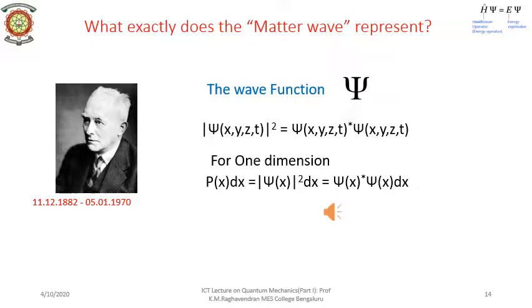We now come to the last question: what does the amplitude of the de Broglie wave represent? In general, in any wave the disturbance represents the change in the value of a physical quantity. So what is the physical quantity in the case of a matter wave? The interpretation was given by Max Born. The quantity whose variation makes up the matter wave is called the wave function, represented by the Greek letter psi. The value of the wave function psi for a moving particle at any particular point x, y, z in space at a time t is written as psi(x, y, z, t). More about the wave function and how to determine it in the next video.